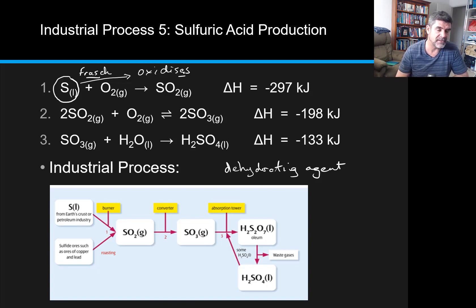The next part is called the contact process, and the main reason it's called the contact process is because we use a catalyst in order for the reactants to be in contact with the catalyst to speed up the rate of the reaction and also to control that reaction because this is an equilibrium.